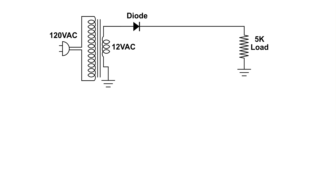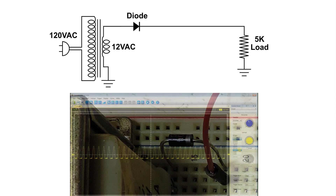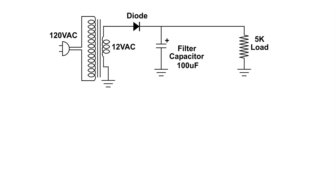Now I'm going to add a diode in this circuit. Notice how the diode is in the circuit — we've got a straight line and then we've got an arrow. That straight line, if we take a look at the diode, is the silver band on the diode. And this is what it looks like — no negative peaks.